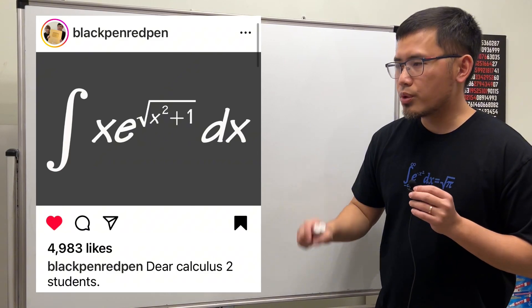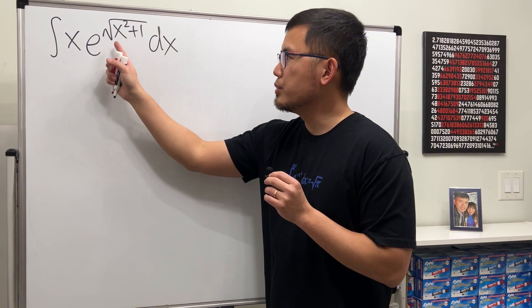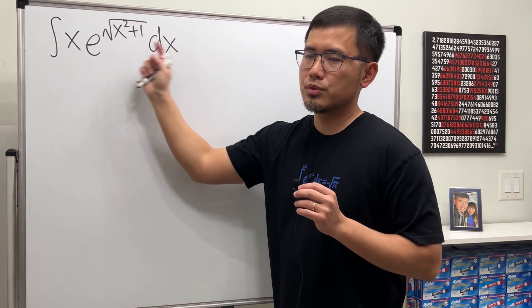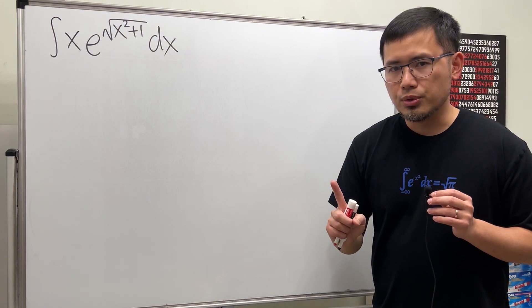So here's a solution to this nice integral for calculus 2 students. We are going to integrate x times e to the square root of x squared plus 1 power, and the key to do this is use substitution and also integration by parts.